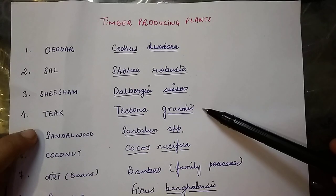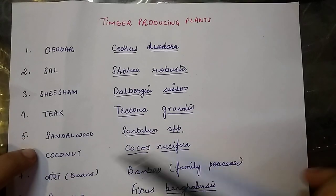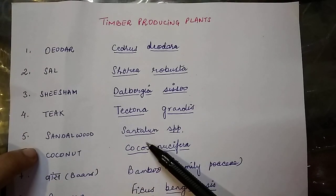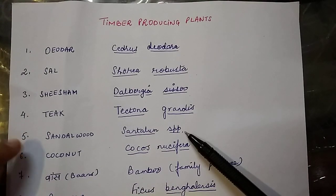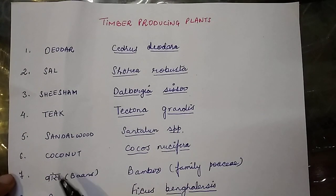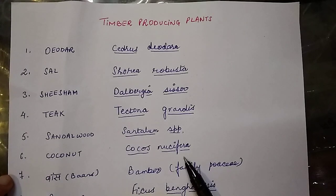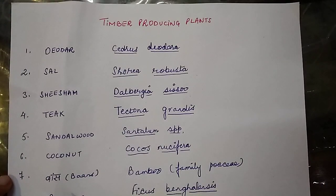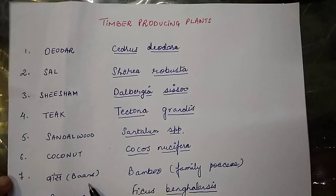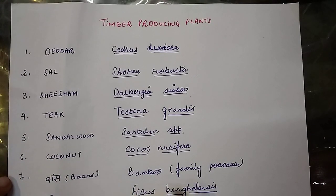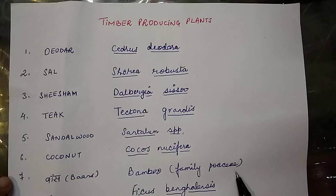Teak, whose scientific name is Tectona grandis. Then Sandalwood, belonging to Santalum species. Then Coconut, whose scientific name is Cocos nucifera. And Bamboo, which is also called Baans in Hindi, belongs to the family Poaceae.